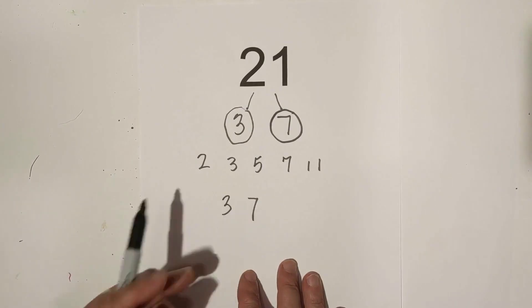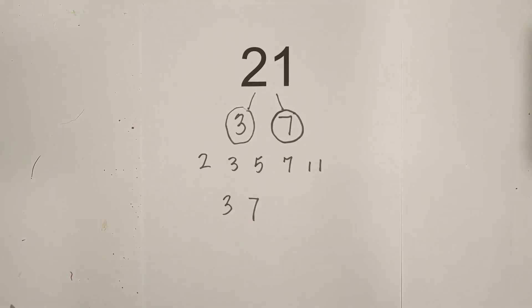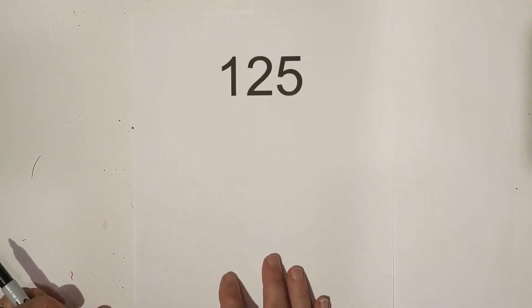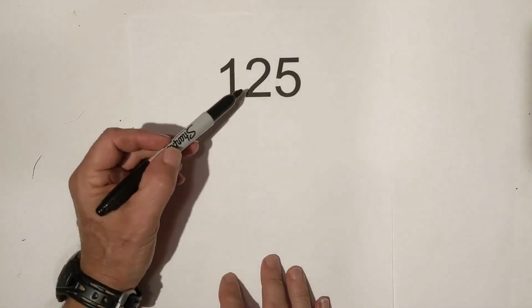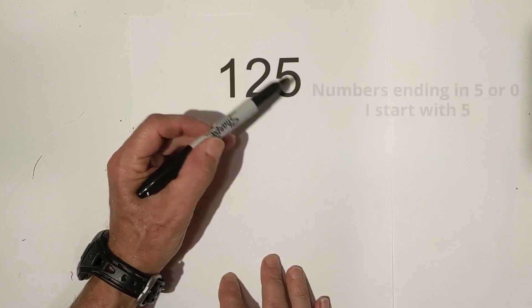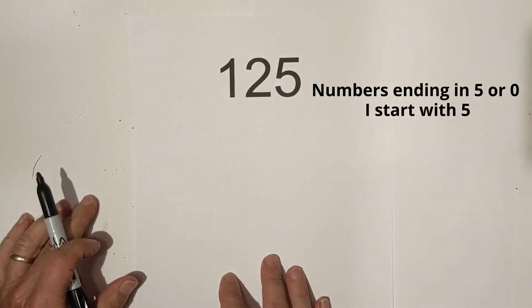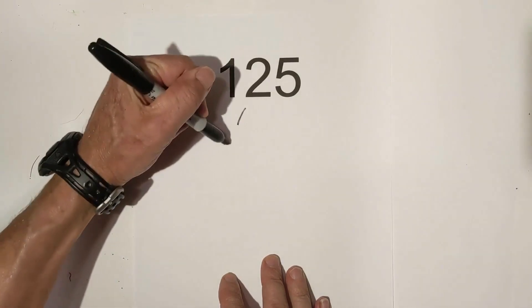Let's try another one. Here is my next tip: whenever I get a number that ends in five or zero, I begin with the number five. And so I know that five times 25 are the factors of 125. I'm gonna circle five because it's a prime number.